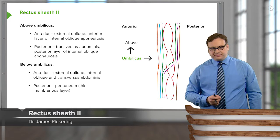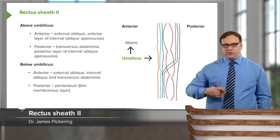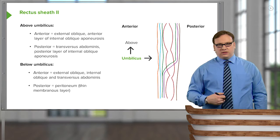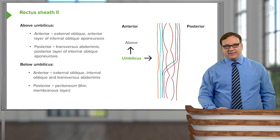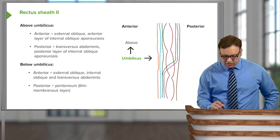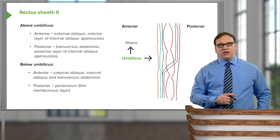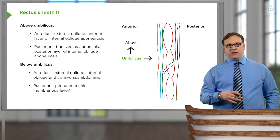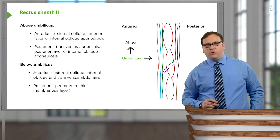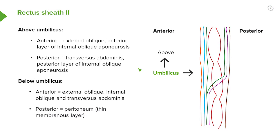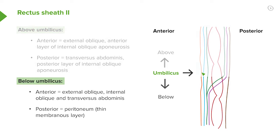This view is slightly different. It's as if we've cut down sagittally through the abdomen to look at these layers. In this diagram we've got anterior here and posterior here. We have a reminder of those layers above and below the umbilicus — this arrow is pointing to the umbilicus, so we can see above it and below it.